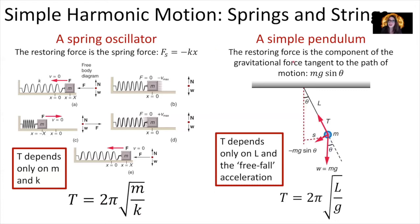We can also do simple harmonic motion using a simple pendulum. In this case, the restoring force is the component of the gravitational force — mass times gravity — tangent to the path of motion. A simple pendulum is a mass attached to a string, and that string is attached to some immovable point.